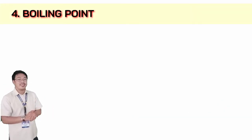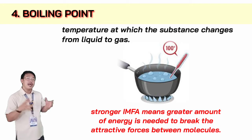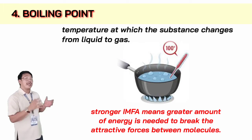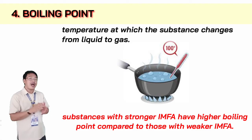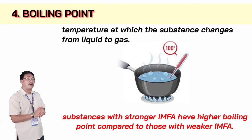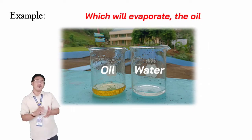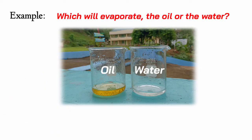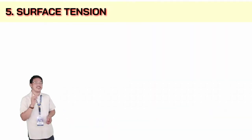We also have the boiling point. Boiling point is the temperature at which a substance changes from liquid to gas. Similar to melting point, stronger intermolecular forces means a greater amount of energy is needed to break the attractive forces between molecules. Substances with stronger intermolecular forces have higher boiling points. For example, water will evaporate faster than oil since water has weaker intermolecular forces of attraction compared to oil.